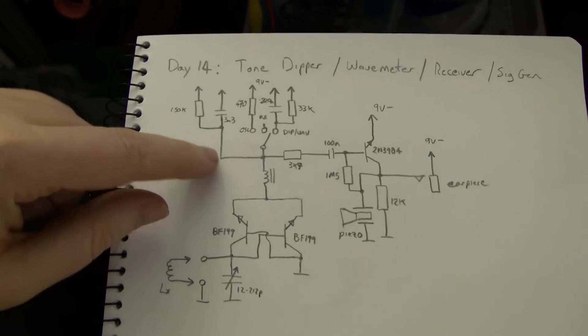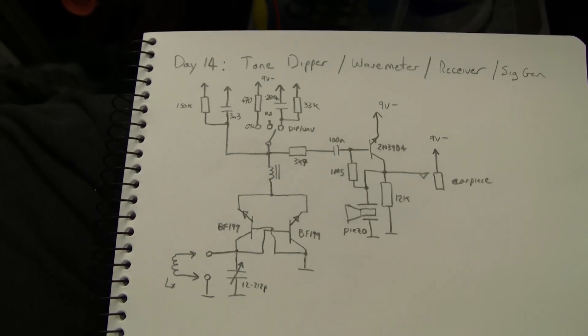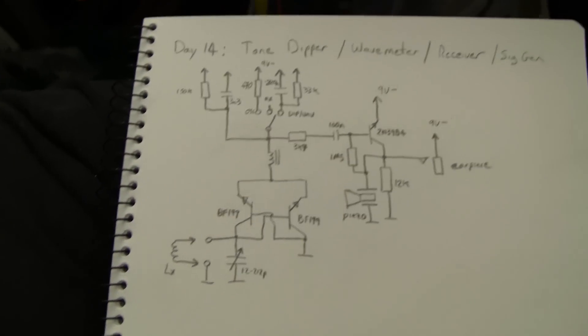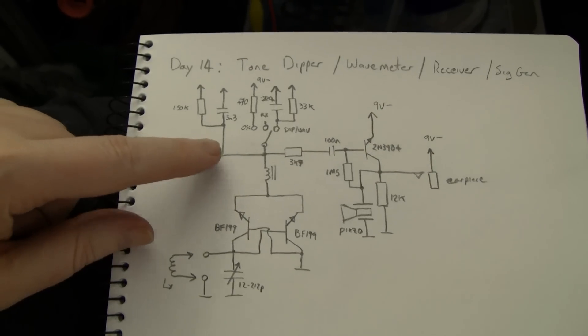Normally when you build a super regenerative receiver, the quench frequency is supersonic, above the range of human hearing, and is normally filtered out or essentially ignored by the rest of the circuit.